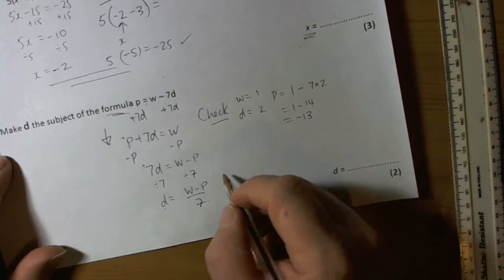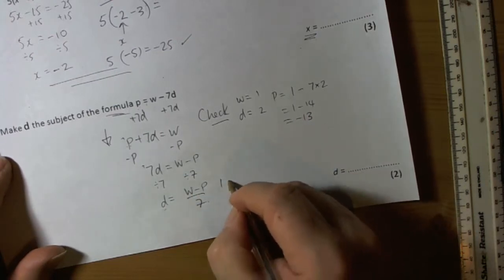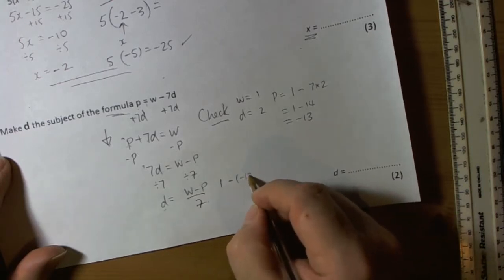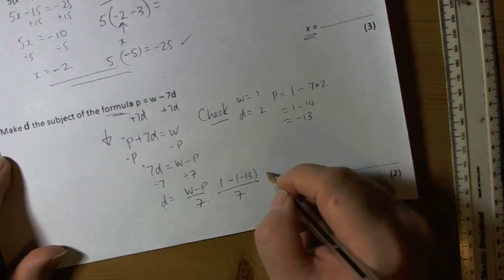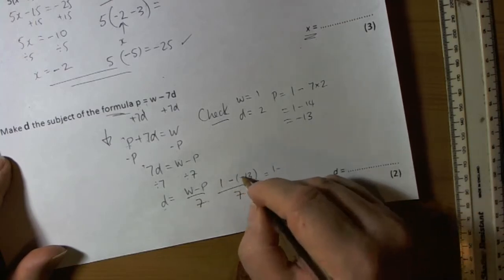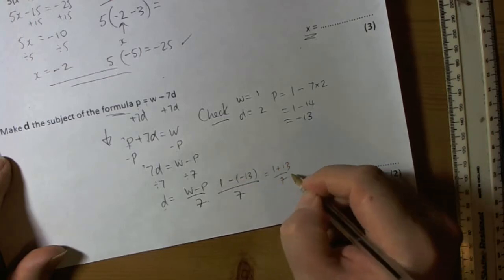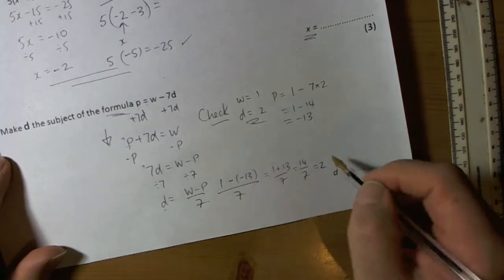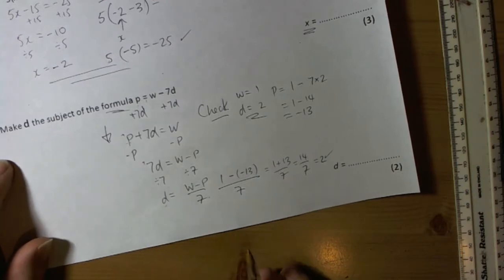So let's have a look. This is telling me to take the w value minus p value, so that was negative 13, and divide that by 7. Minus next to a minus makes it a plus, so negative times negative equals plus. So 1 plus 13 over 7, that's 14 over 7, which is 2. We originally chose the value of 2, so our check is kind of helping us to see that the rearrangement has worked.